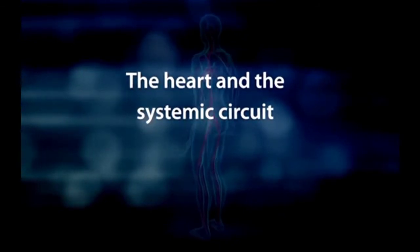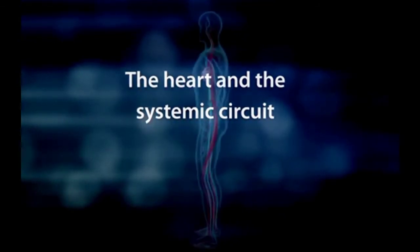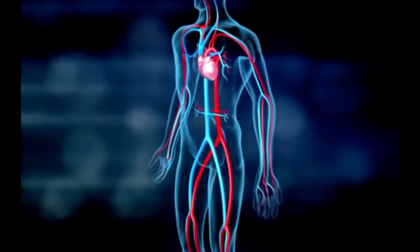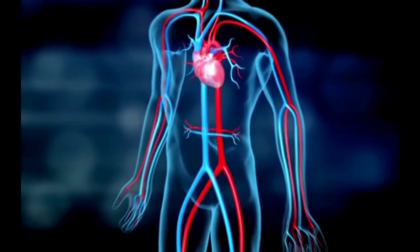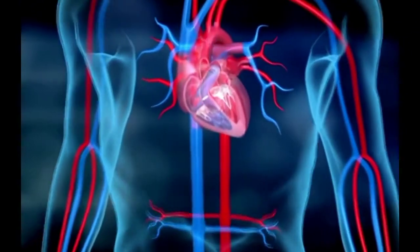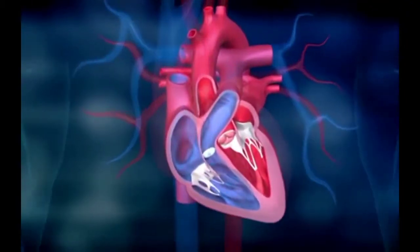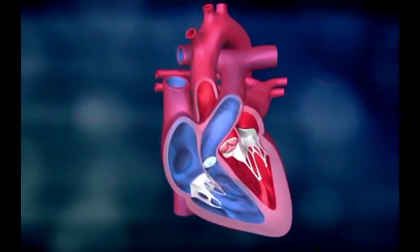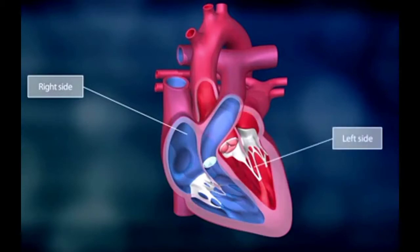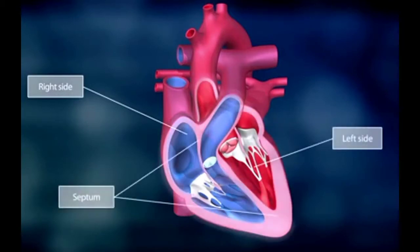The heart is a muscle that pumps blood into entire body through many contractions, supplying all organs with sufficient oxygen and other necessary substances. The heart is divided into right side and the left side. The two sides are separated by a septum.